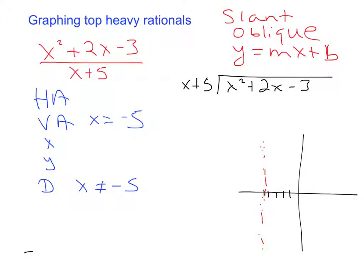So as a review for long division, I look at my x squared. What do I have to multiply this first term by to turn it into an x squared? Well, I have to multiply it by x. So I'm going to multiply by x and then what I have to do is I have to distribute this. So I'm going to get x squared plus 5x.